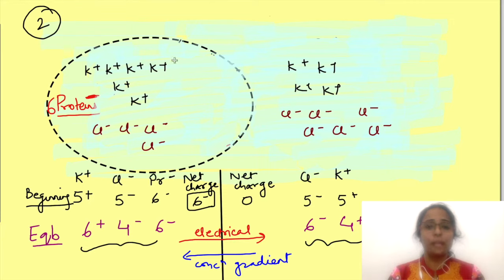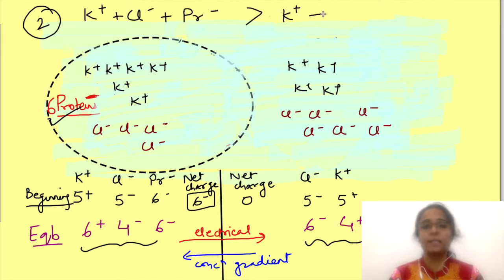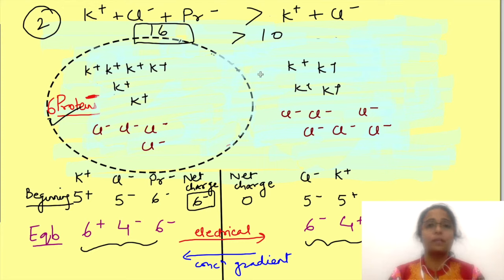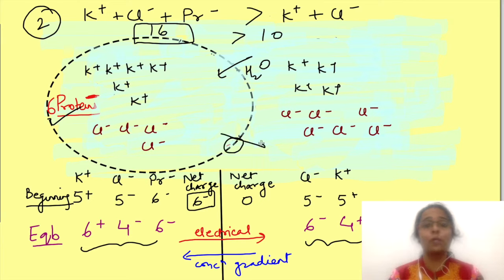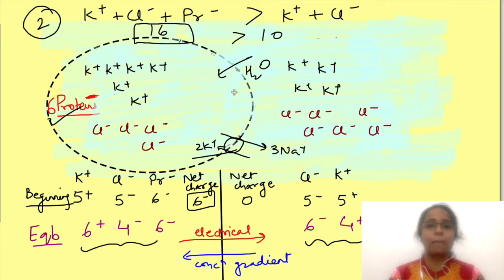Second, the total number of ions is greater on the side with the non-diffusible ion. Counting here gives 16 ions on one side and 10 on the other. So the number of osmotically active particles is greater on one side of the membrane. This leads to movement of water from outside to inside, causing cell swelling and rupture. This doesn't happen in a cell because of the sodium-potassium ATPase, which constantly pumps out more ions than it brings in. But when sodium-potassium ATPase stops functioning, it leads to entry of water, cell swelling, and ultimately rupture.